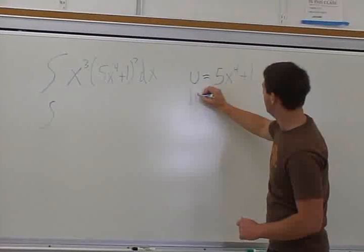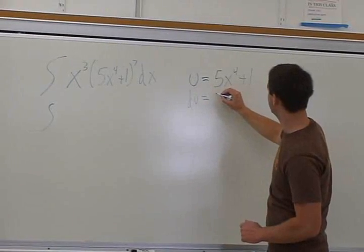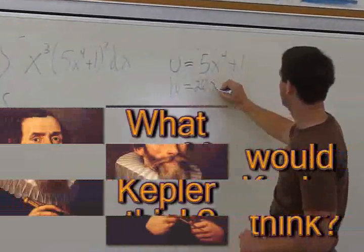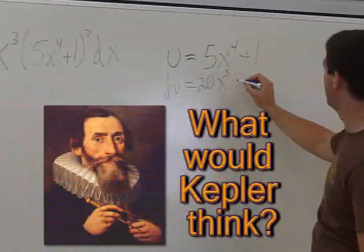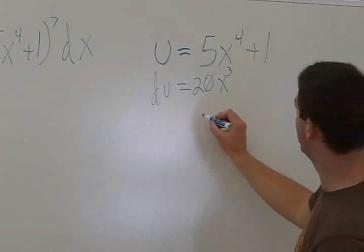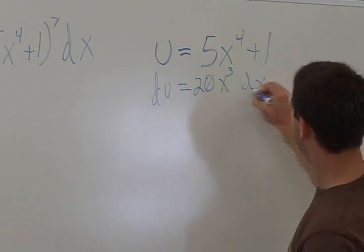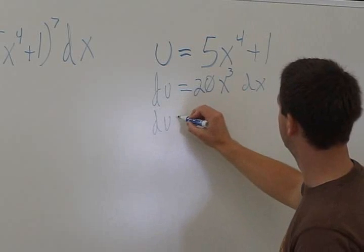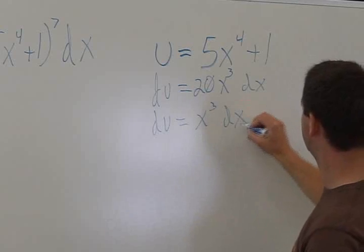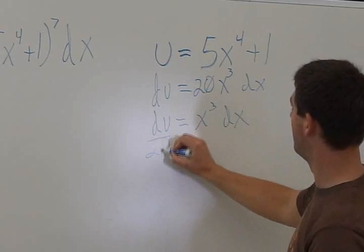The derivative du is going to equal—we multiply the four out, so that's 20x³ by the chain rule. The constant becomes zero. So x³ dx equals du divided by 20.